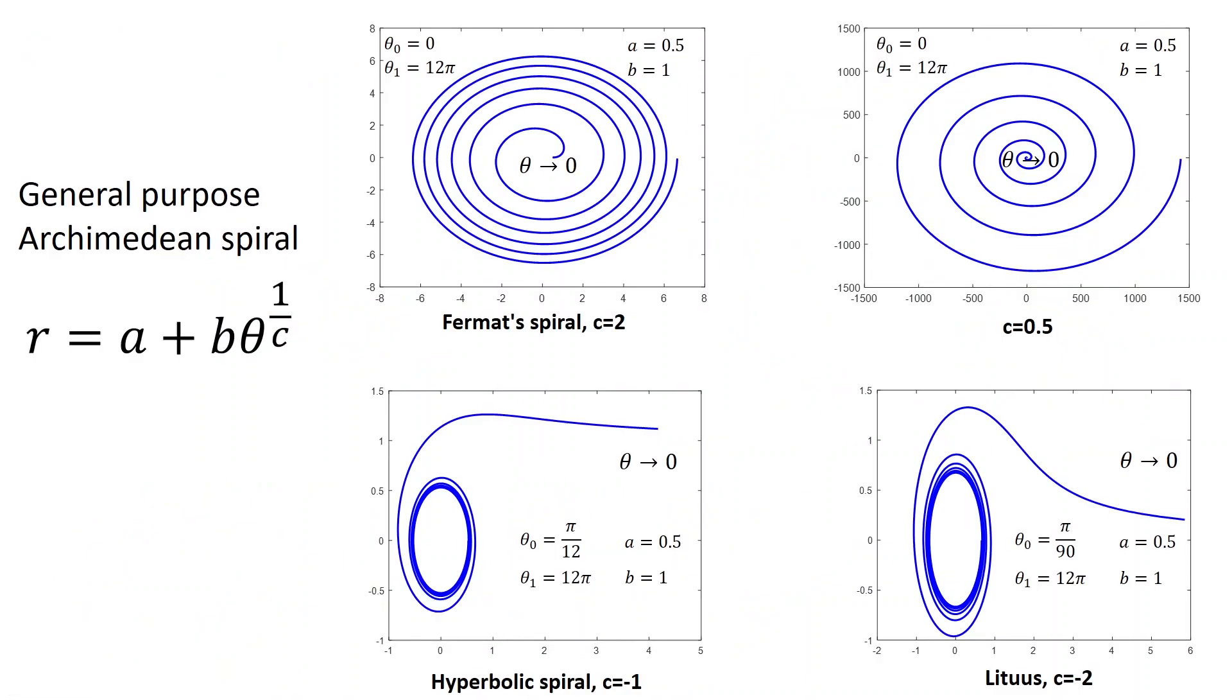We also have a general purpose Archimedean spiral. In that case, the equation is the same, a + b times theta, but this theta is raised to a power of 1/c. Depending on the value of c, you can get different types of spiral. So, for example, if c is larger than 1, then this power will be less than 1, and that means the distance between the sections will gradually decrease.